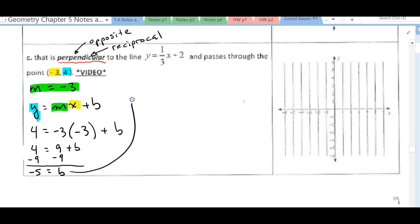So now that I have my y-intercept, I can go ahead and write my equation. So y is equal to negative 3x. Don't forget that x. That seems to be a common mistake. Minus 5.